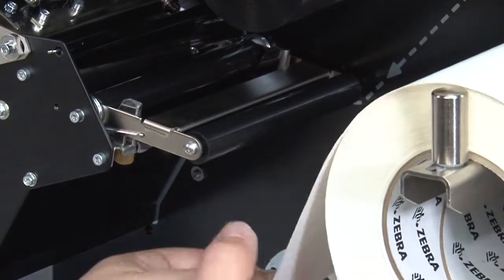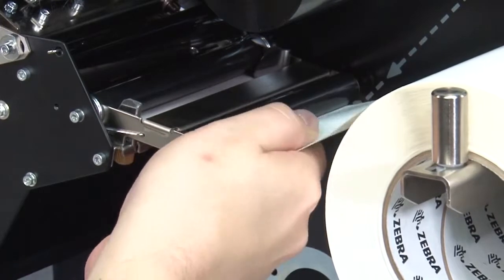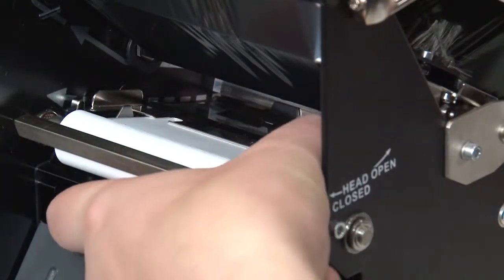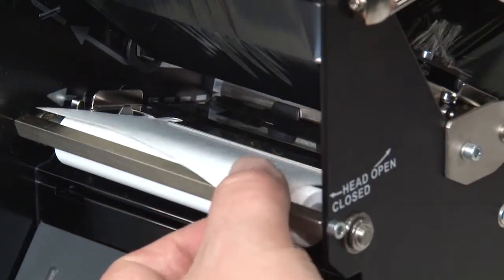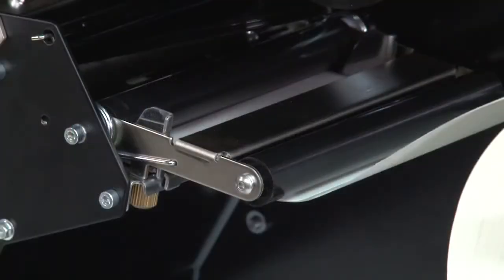Thread the media under the media dancer assembly roller, under the media guide roller, and under the upper media sensor. Push the media forward until it passes under the snap plate, under the printhead, and over the platen roller.